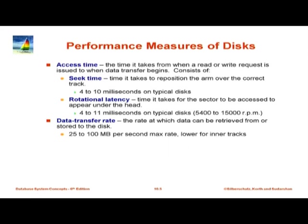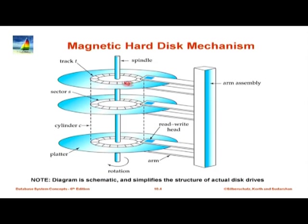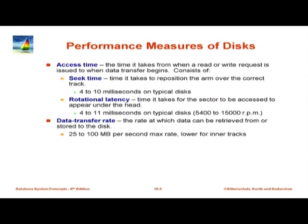There are important time characteristics. The access time is the time from when a read/write request is issued to the disk, to when the data transfer actually begins. This has two components. The first is the seek time — the time it takes to reposition the arm over the correct track. The arm is at some track and has to move to an inner or outer track depending on the request. This depends on where the arm is relative to the target track; if on the same track, it is zero.